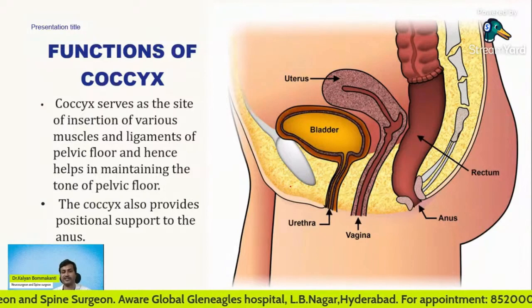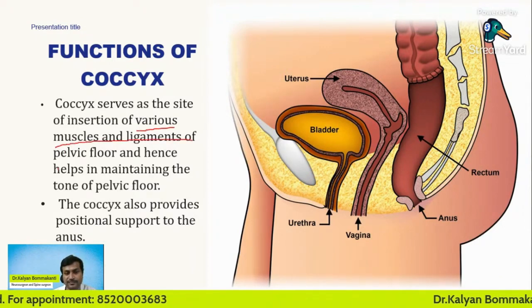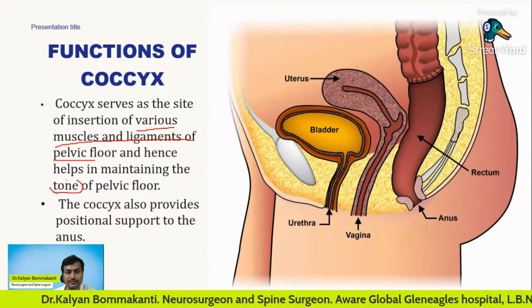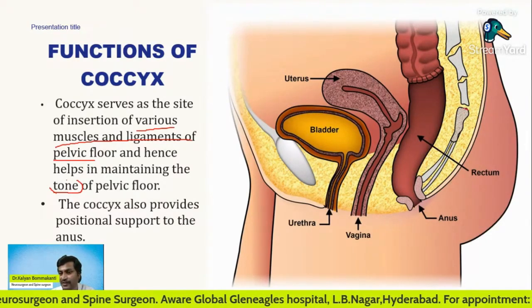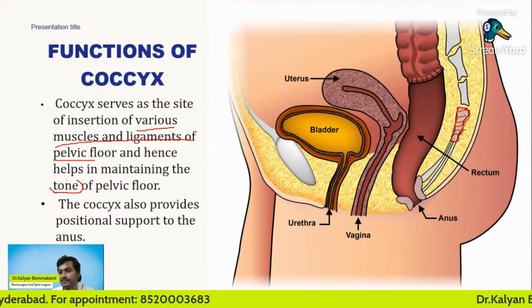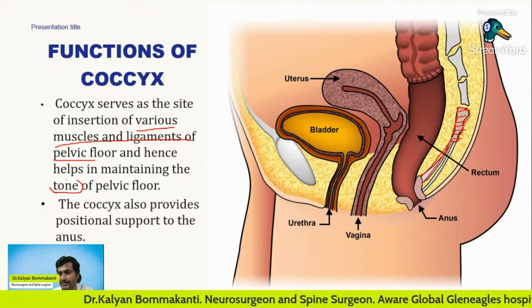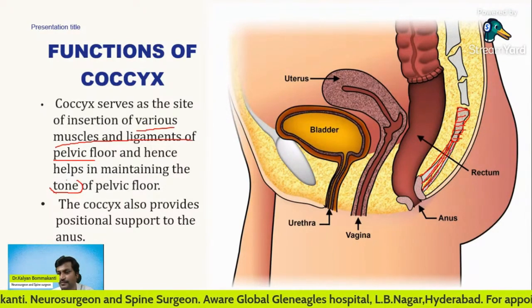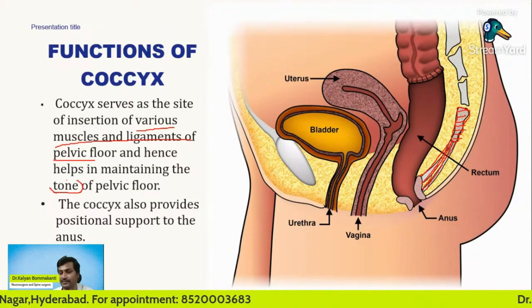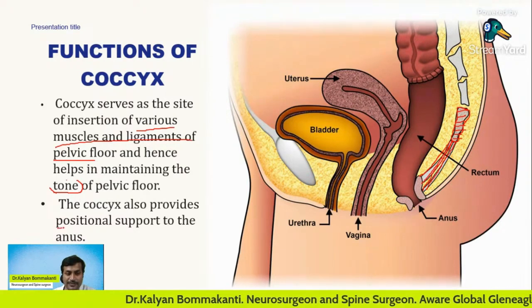Let us understand what are the functions of coccyx. Coccyx serves as the site of insertion of various muscles and ligaments of the pelvic floor, and hence coccyx helps in maintaining the tone of the pelvic floor. This bone, by means of numerous ligaments, also provides some support to the anus. Ligaments are something like strings or threads supporting it — so the anus gains its support by means of the strings which are attached to the coccyx. So the coccyx provides positional support to the anus.